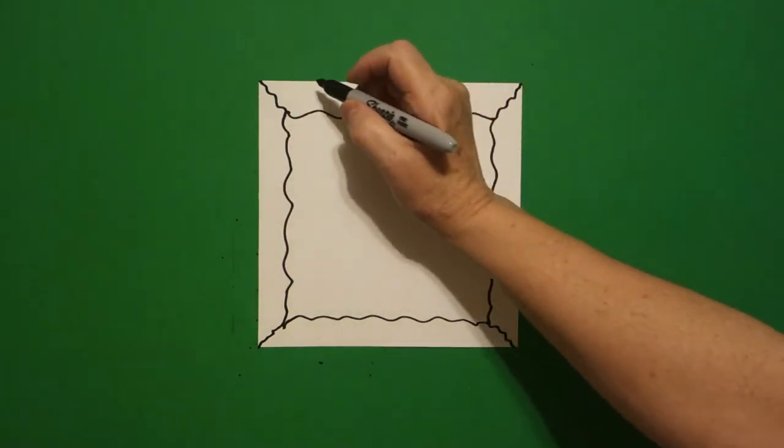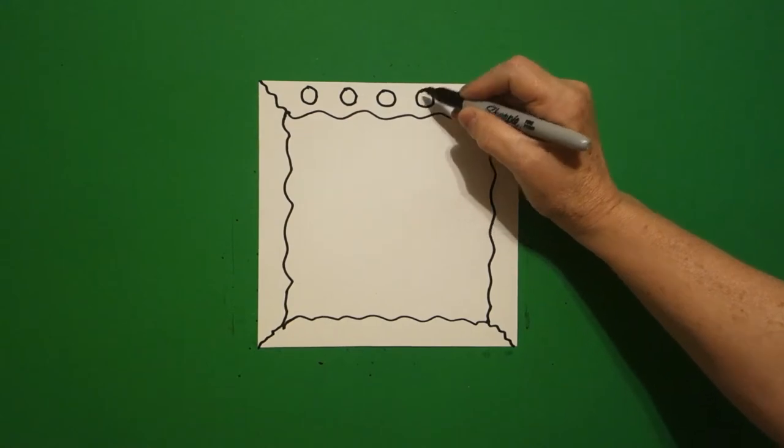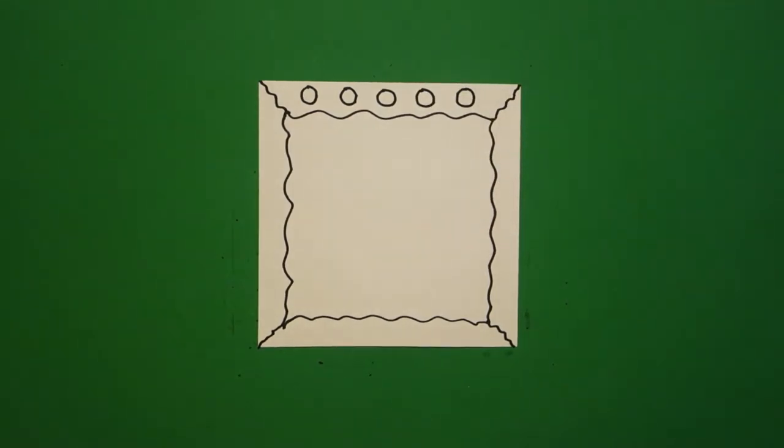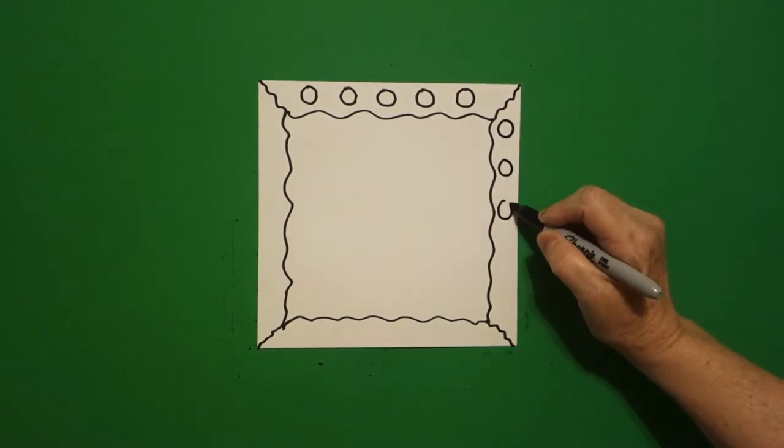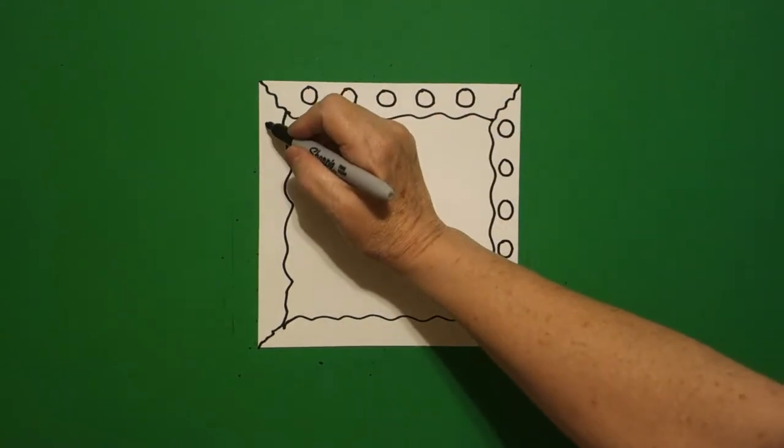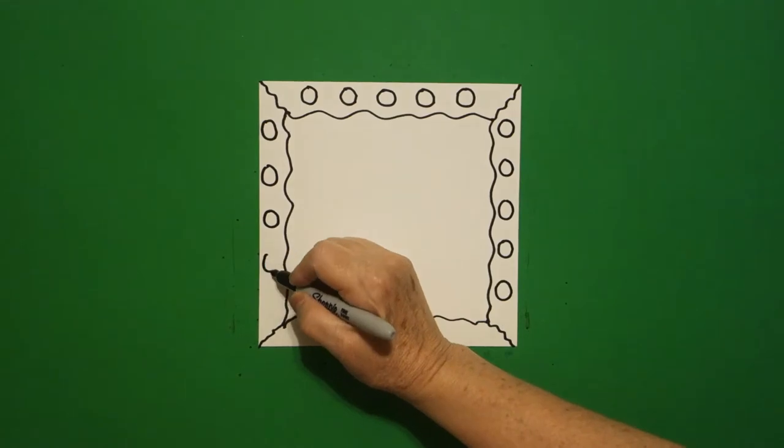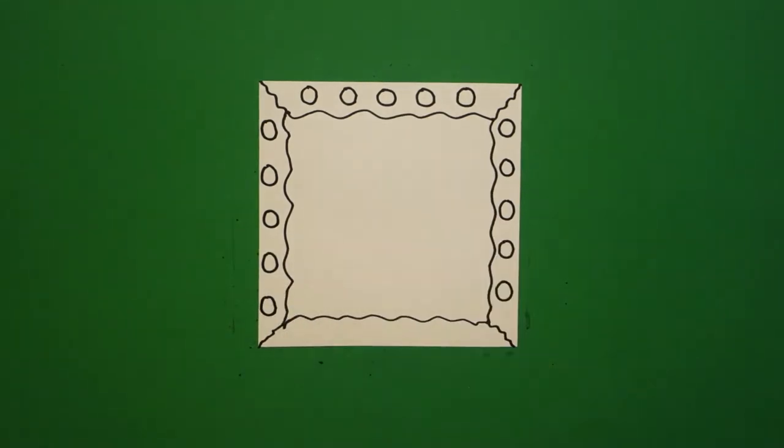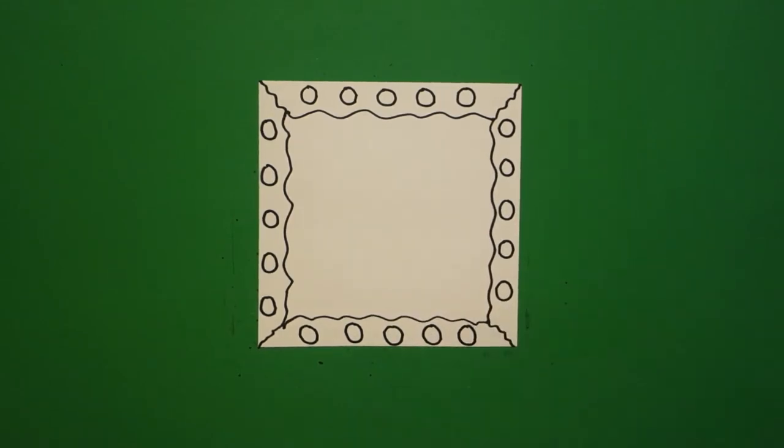Inside each part, I'm going to draw one, two, three, four, five baby circles. Some of you might draw more. One, two, three, four, five baby circles. Jump over. One, two, three, four, five baby circles. One, two, three, four, five baby circles.